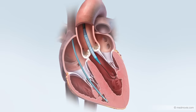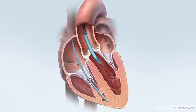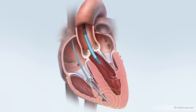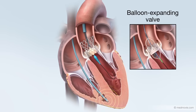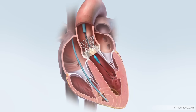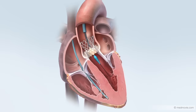Once the physician has the new valve positioned correctly within the diseased valve, the heart is sometimes paced. Pacing makes the heart beat so fast it cannot pump blood for a few seconds, thereby allowing safe and effective valve deployment. To deploy the valve, two techniques are commonly used: in one, the catheter is pulled back and the valve expands into place, and in the other, a balloon expands the valve. After valve expansion, pacing is turned off and the heart beats normally.